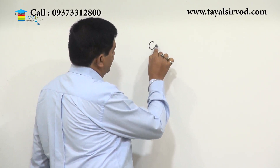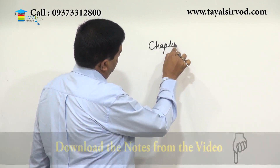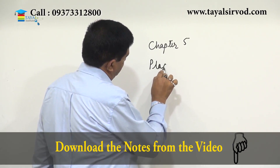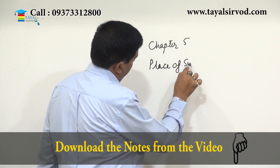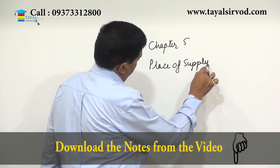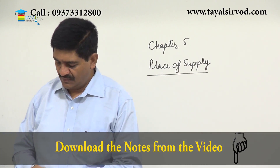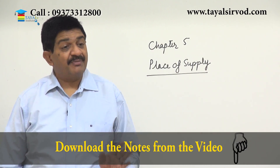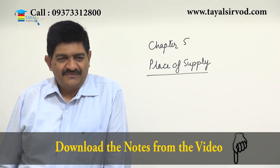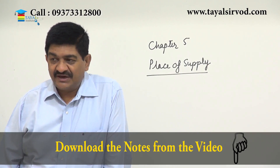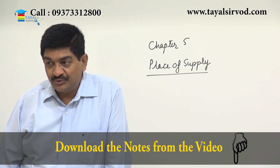We have Chapter 5 and the title is Place of Supply. What is supply? We have already discussed in Section 7 read with Schedule 1, Schedule 2, and Schedule 3.